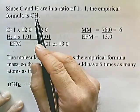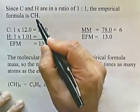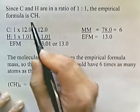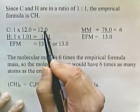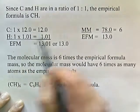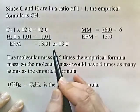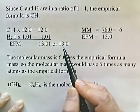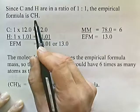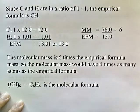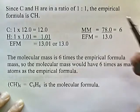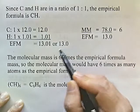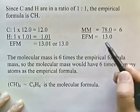The empirical formula is CH. Now we find the empirical formula mass: 1 carbon (1 × 12) plus 1 hydrogen (1 × 1.01) gives 13.0. This is the empirical formula mass. The problem states the molecular mass is 78. Dividing the molecular mass by the empirical formula mass: 78 divided by 13.0 gives 6.